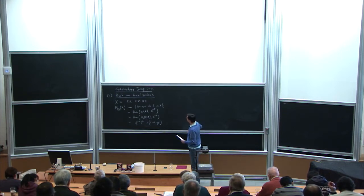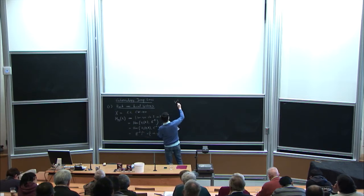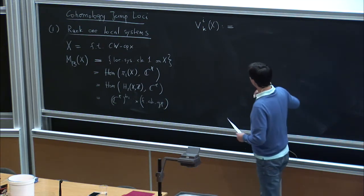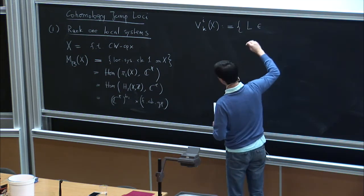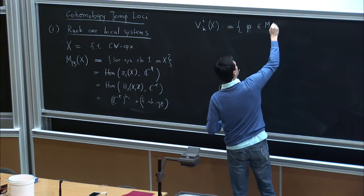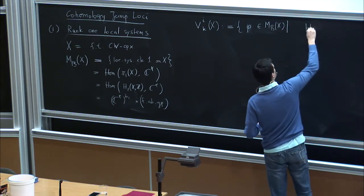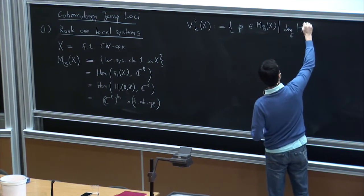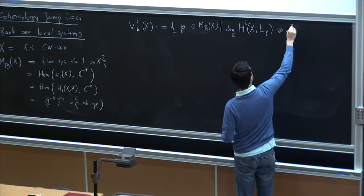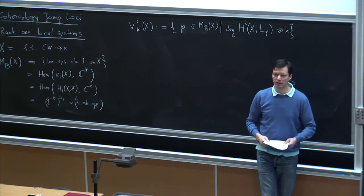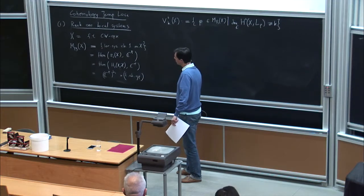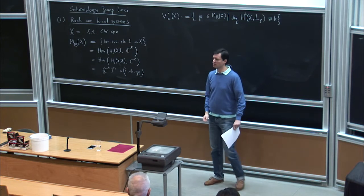Inside here, the cohomology jump loci V^i_k are defined to be those local systems ρ, as a representation, such that the dimension of the i-th cohomology of the associated local system is greater than or equal to k. So these are natural substrata in this moduli space, and because of this finiteness condition, it can be shown that these are actually affine subschemes. There are precise equations for this V^i_k.